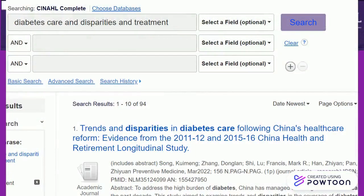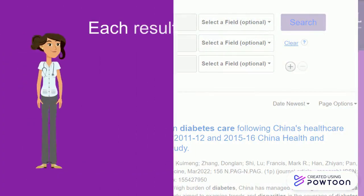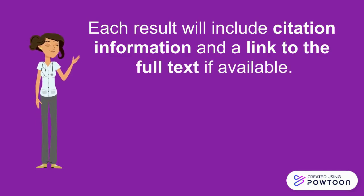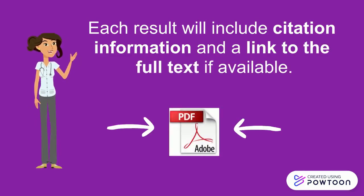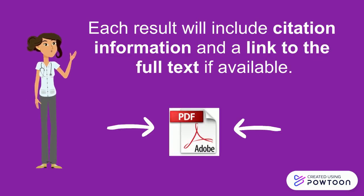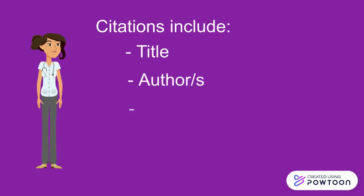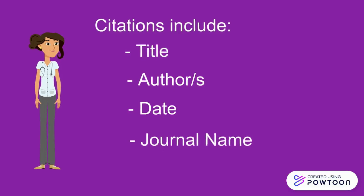There are 94 results for this search. Each result will include citation information and a link to the full text, if available. Full text availability is indicated by the white and red PDF icon. Citations include the title of the resource, the authors, the date of publication, and the journal name.